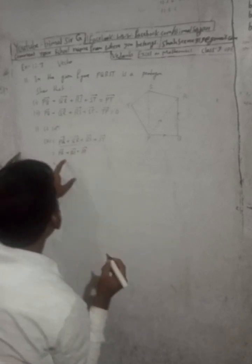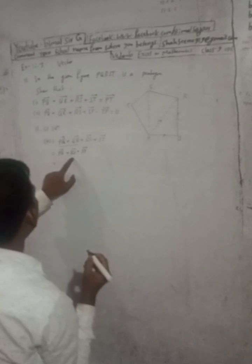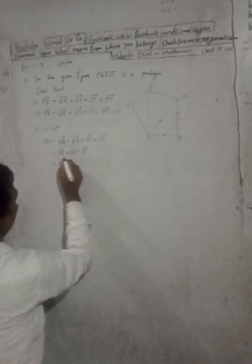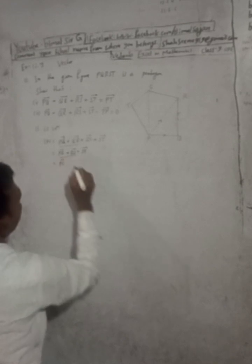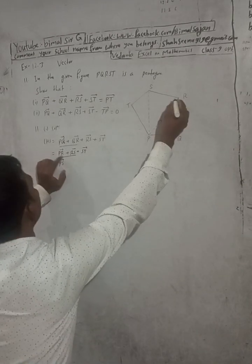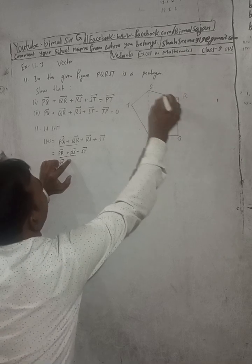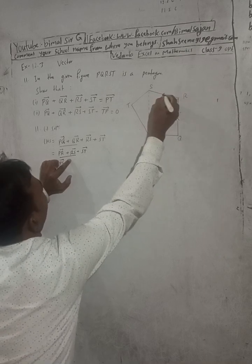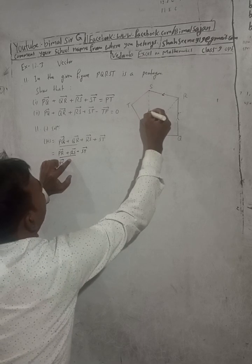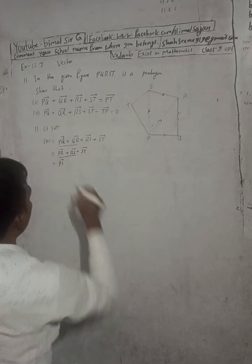Now we are saying that this will be PS vector. RR center, which is PS vector. So we will put PR, PR plus RS. This is PS.